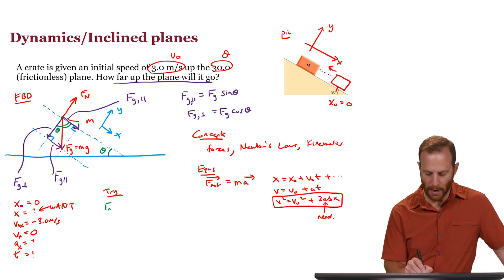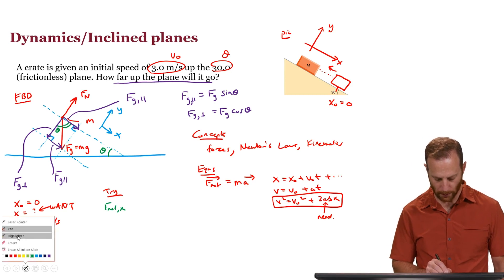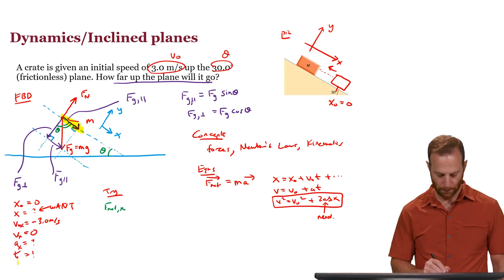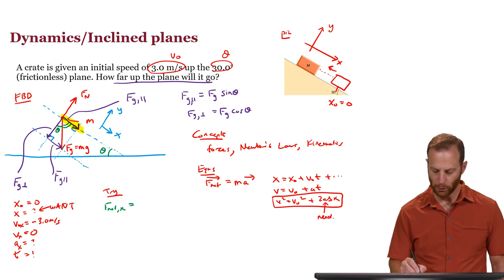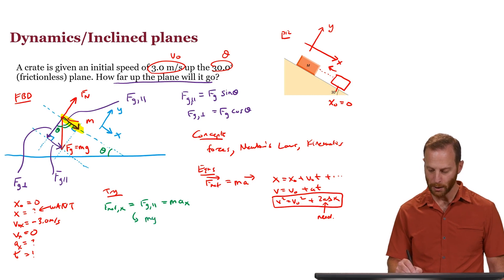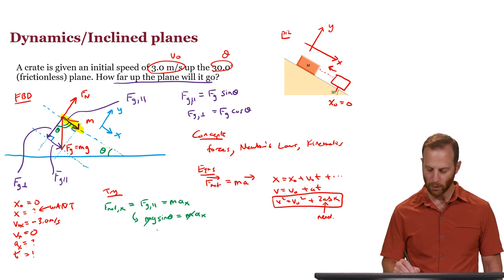Newton's second law in the x direction is actually now quite simple because there's only one force that points in that way. Here it is. That tells us the net force in the x direction is equal to the parallel component of gravity. That's equal to m times the acceleration in the x direction. Therefore this is F_G which is mg times the sine of theta. That's equal to mass times acceleration. The masses cancel and so we've learned what the acceleration must be in the x direction.